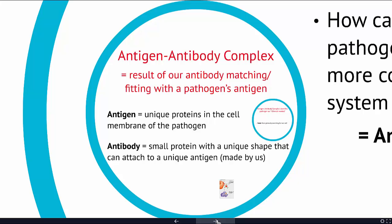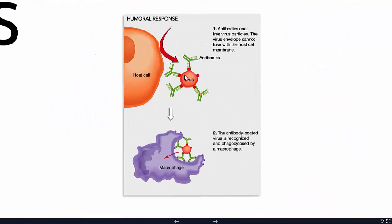Once you have that antigen-antibody combination — that complex — you trigger a full immune response. B cells, a type of white blood cell, produce hundreds of millions of different antibodies, and the idea is that one of them will fit onto the antigen. Here we have a virus where the little red balls are the antigens sticking out of the viral capsule. When antibodies attach to the virus, it can no longer attach to the host cell, blocking infection.